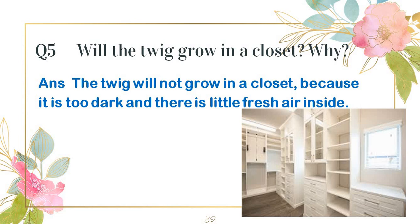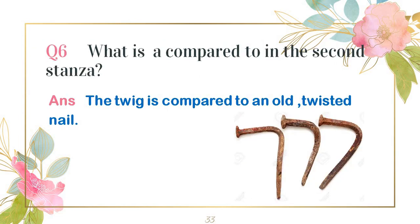We have put a plant in the soil, but what happens is that you need sunlight, you need water, and fresh air as well. So what is the twig compared to in the second stanza? The twig is compared to an old twisted nail. The twig is compared to an old twisted nail.